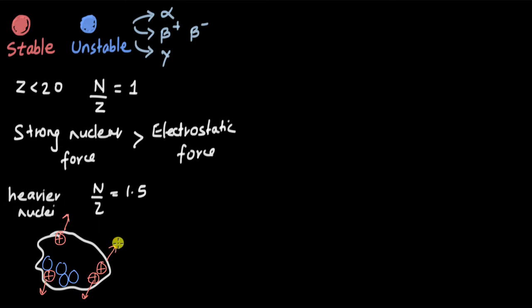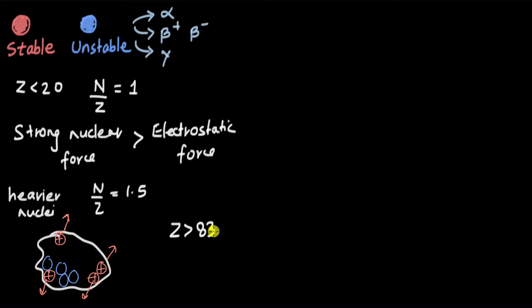But if you keep on increasing the number of protons, there is a limit beyond atomic number 83. Adding more neutrons no longer overcomes the Coulombic repulsion force, because now there are so many protons that the electrostatic force of repulsion wins — the neutrons can no longer insulate the protons from each other, and the nucleus becomes very unstable. So all atoms with atomic number more than 83 have unstable, radioactive nuclei.